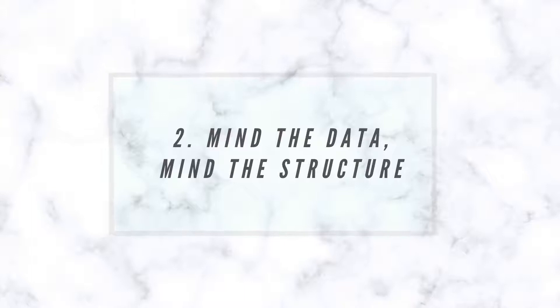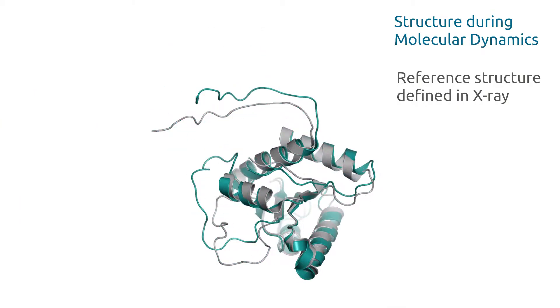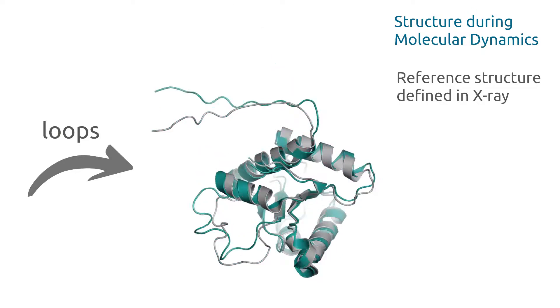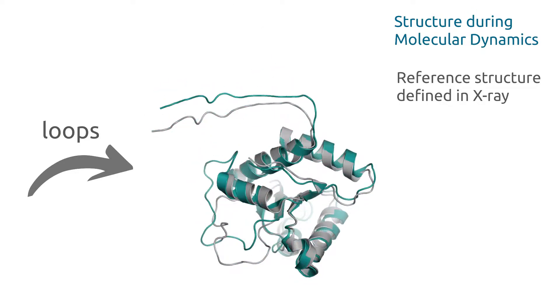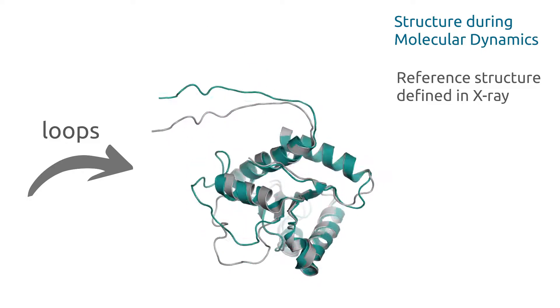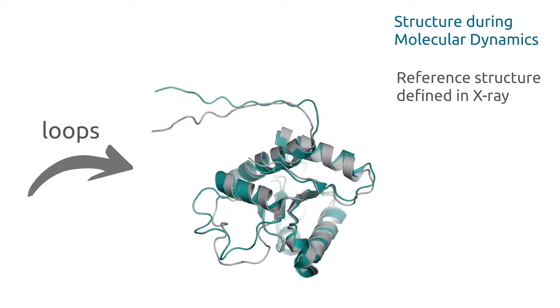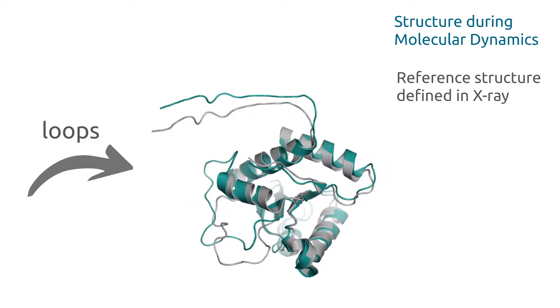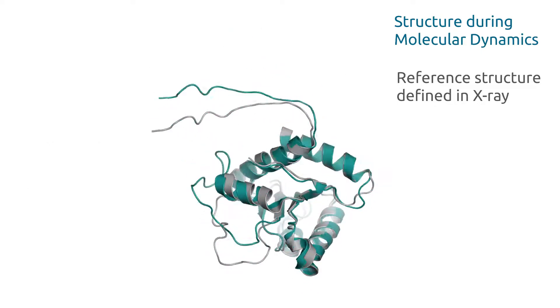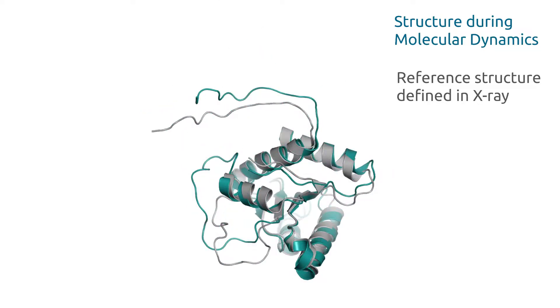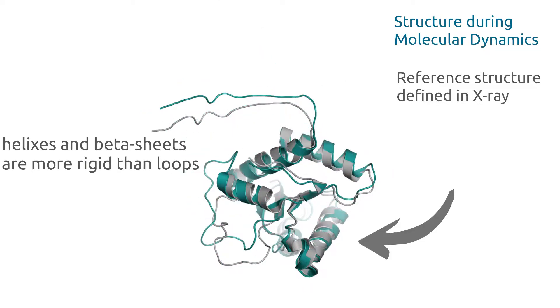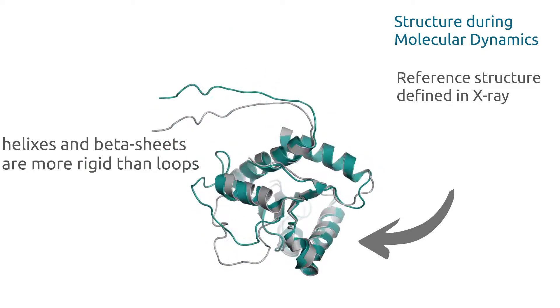So tip number two, mind the data, mind the structure. So this tip might sound very strange at the beginning, but it is actually strongly related to the previous point. So while you do your research, you should check for flexible loops on the protein. Mind that the structure of the protein and the coordinates might be defined, but actually the position of the atoms in the crystal structure is sometimes unreliable. The protein is flexible naturally, and some parts of the protein are even more flexible than others.